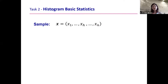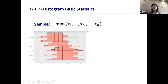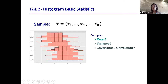The next challenge is: we have data with a more complex structure, we know how to do operations and understand the strong and weak points. How do we calculate summary statistics vital for analyzing the data? Our sample is now histograms — each of X1 through XN is one histogram. We need to define the sample mean, variance, covariance, and correlation. There are three main ideas to deal with these.